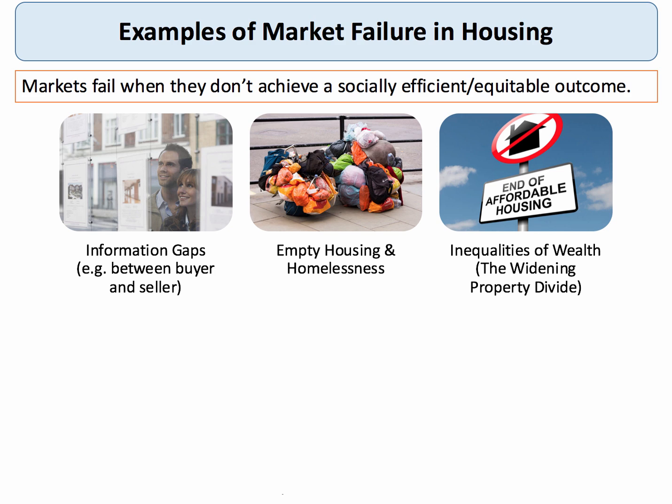Let's take housing as a quick example — the housing market is often in the news. Markets fail when they don't achieve a socially efficient or equitable outcome, and the housing market is a good example of that. There are significant information gaps between buyers and sellers, not just in the market for buying homes but also in the market for student rented accommodation. One could argue that empty housing is an inefficient waste of resources, and homelessness clearly raises issues of equity and fairness.